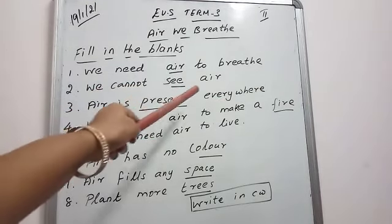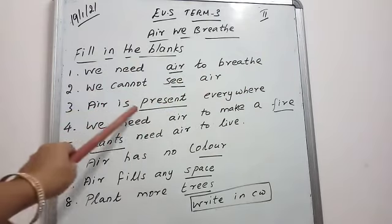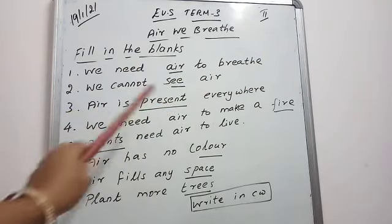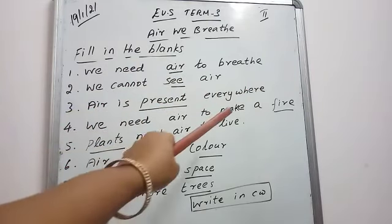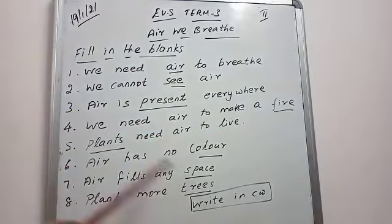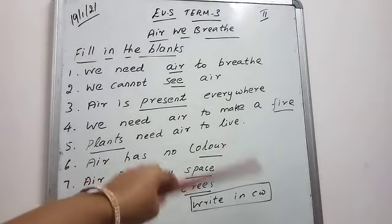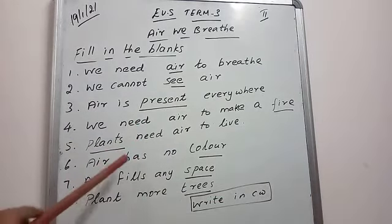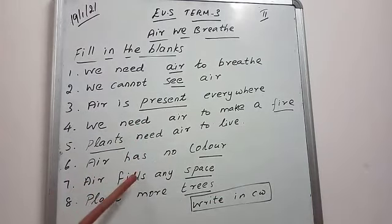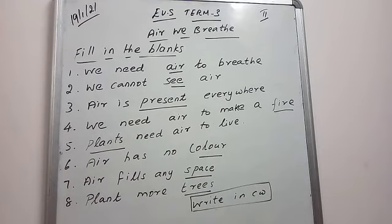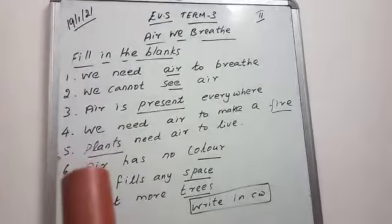We cannot see the air. Air is present everywhere. We need air to make a fire. Plants need air to live. Air has no color. Air fills any space. Plant more trees. I hope you understand this lesson. Try to write in your classwork note. Thank you, children.